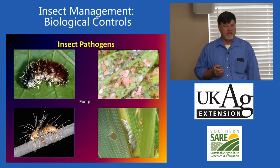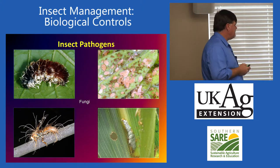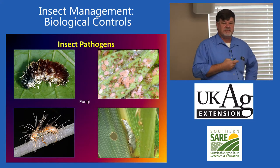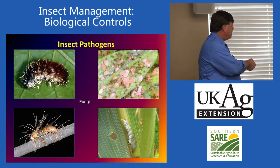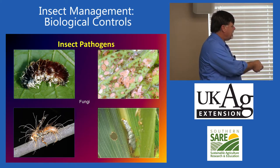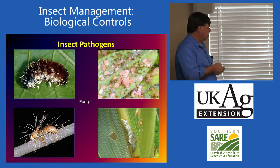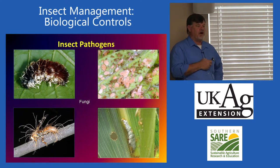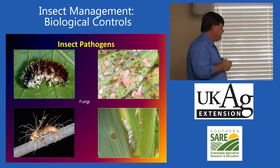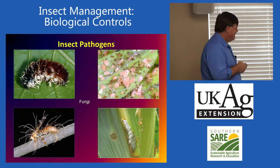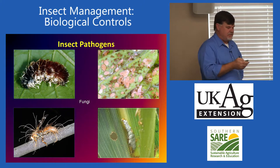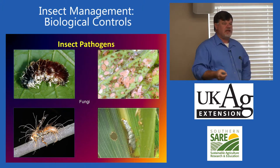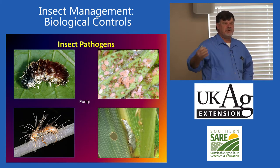We also have diseases attacking insects that people need to be able to recognize. These are fungal diseases of insects. Here we have aphids — the healthy ones are the small red ones, while those that are all puffy have been attacked by a fungus. Here's a paper wasp and a fall armyworm covered with fungal spores, killed by various fungi. When people see things like that, they can generally begin to ignore that pest problem.